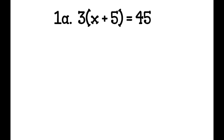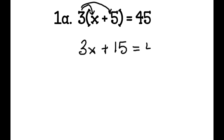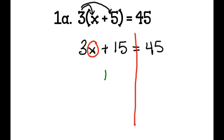Problem 1a: I have 3 times the quantity of x plus 5 equals 45. I'm going to use distributive property. 3 times x is 3x, and 3 times 5 is 15, equals 45. Then I draw the line and circle my variable. The first thing I need to undo is the addition or subtraction, so I add negative 15 to both sides.